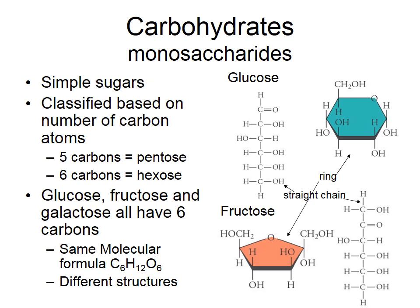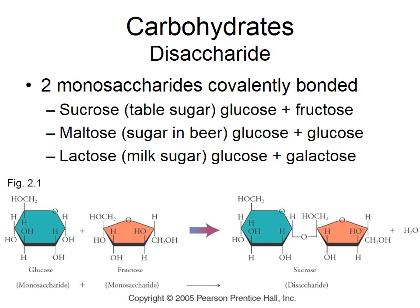High fructose corn syrup is much higher in fructose than table sugar (sucrose) and tastes sweeter because fructose is sweeter than glucose. However, fructose doesn't produce the same feeling of satiety — it doesn't send the same signal to the brain. That's why fructose and high fructose corn syrup often contribute to obesity and type 2 diabetes. The body can interconvert fructose and glucose.